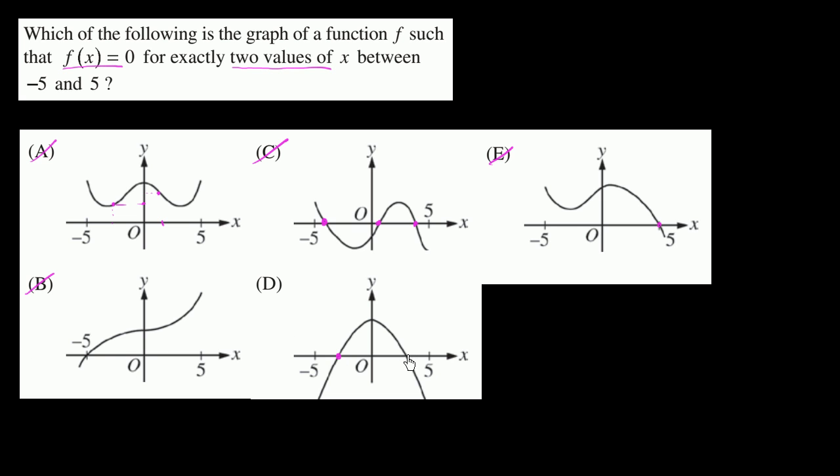This one intersects the x-axis exactly two times. f of x is equal to 0 for this value of x, and f of x is 0 right over there. So this is our choice.